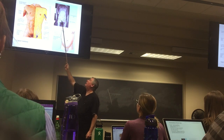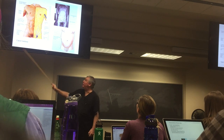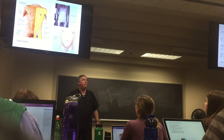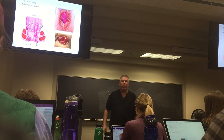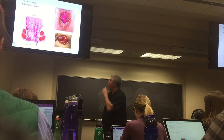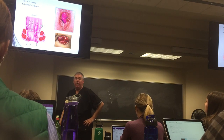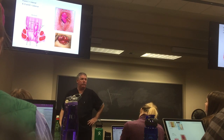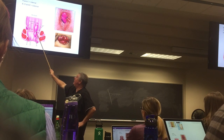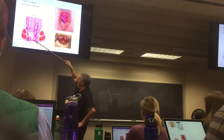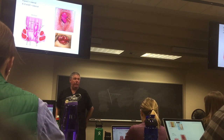Here's a caput medusae case — pretty impressive. These are the superficial veins on the abdominal wall. These are hemorrhoids. There are two types: internal and external hemorrhoids. If we look at the colon, there are different pieces and parts. There's a structure called the pectinate line. Below the pectinate line it's somatic — it's characterized epithelium, just like skin.